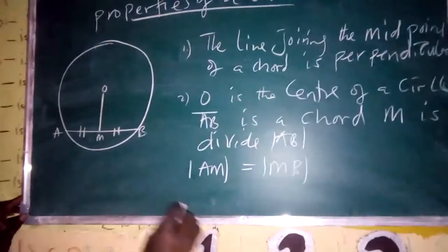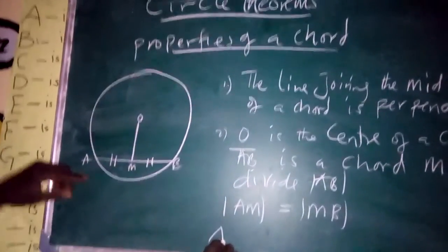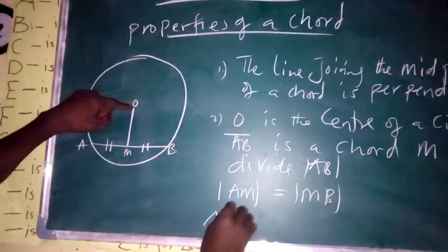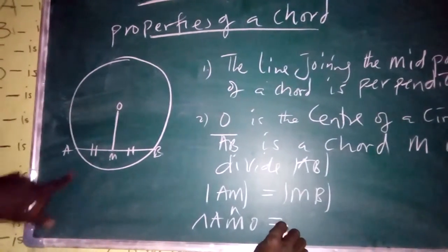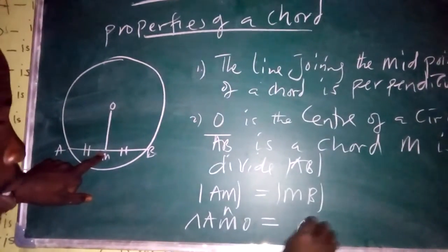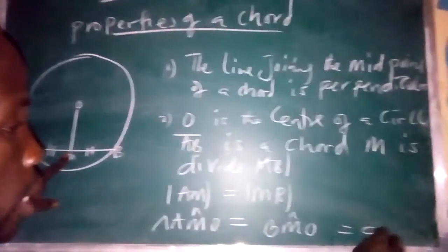Now we want to try triangle. Triangle AMO equals triangle BMO, which is equal to 90 degrees.